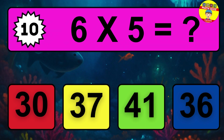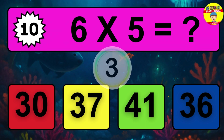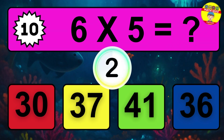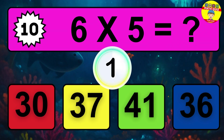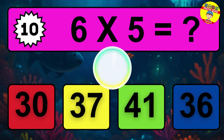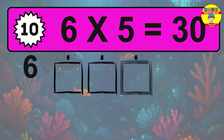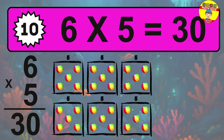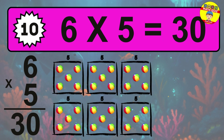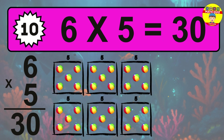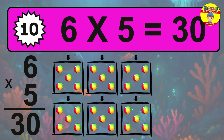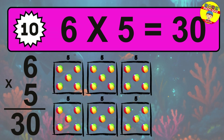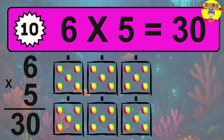Question 10. Six times five equals what? The answer is six times five is 30. To calculate, we have six groups with five balls each one. So how many balls do we have? Thirty balls.